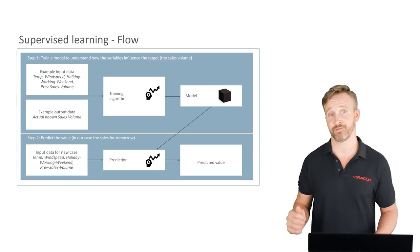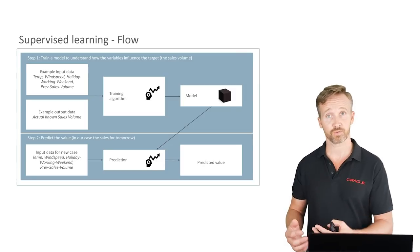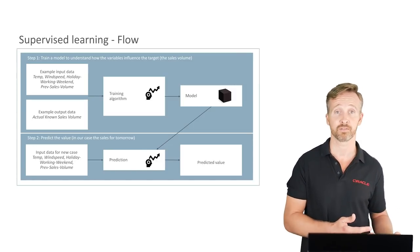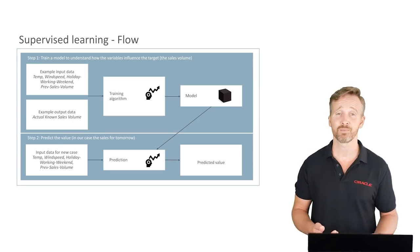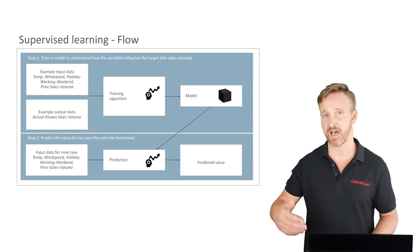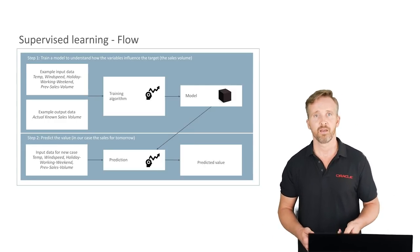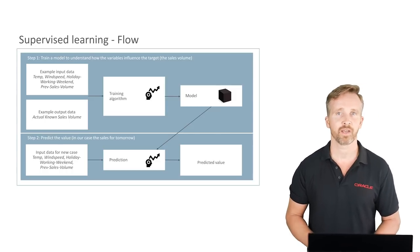In the prediction phase, we take new data — values of the input variables for tomorrow. We know whether tomorrow is a holiday or working day, and we can get a fairly accurate weather prediction as an input variable. Those input variables are processed through the model and out comes a predicted sales volume. We choose to predict only tomorrow's sales, but in principle we could ask for any number of days ahead. This type of supervised machine learning is called regression — a regression algorithm always tries to predict a continuous value.